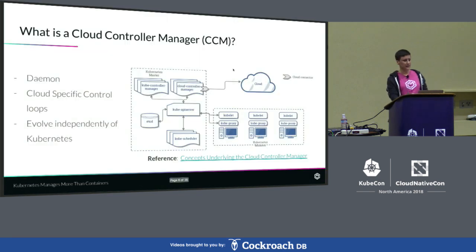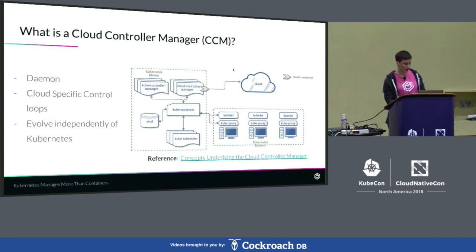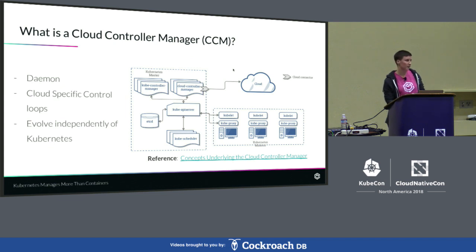So, what exactly is a CCM? CCMs were first introduced in Kubernetes in version 1.6, and it runs a daemon that embeds cloud-specific control loops. This was pulled into its own binary to allow cloud providers to develop and release at a different pace than the Kubernetes project — instead of having to do the quarterly releases with Kubernetes, they could release faster. This really allows the cloud-agnostic tooling, which is Kubernetes, to deeply integrate with your cloud provider of choice, giving you that feature set of the cloud provider, while still being cloud-agnostic.